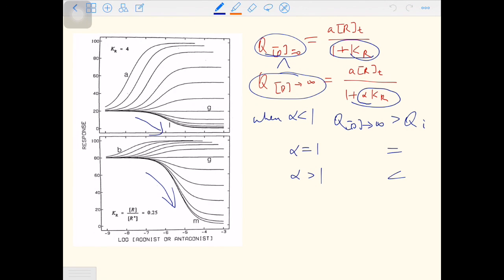So the take-home message for the constitutive activity model is that you have to know how to calculate KR initial and KR final, and you have to know what role alpha plays in the level of the response.